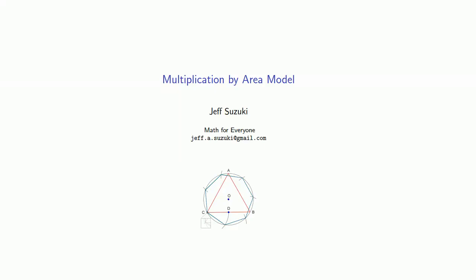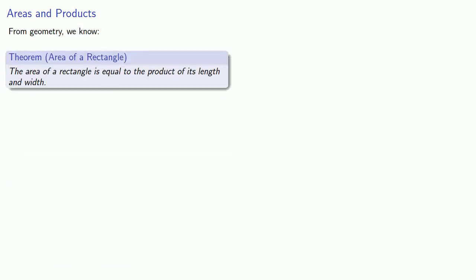There's a number of ways of multiplying two numbers, but one of the more visually appealing is known as multiplication by an area model. And this is based on the following idea. From geometry, we know that the area of a rectangle is equal to the product of its length and width.